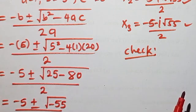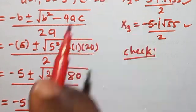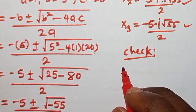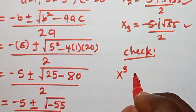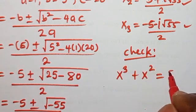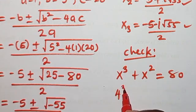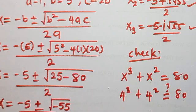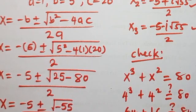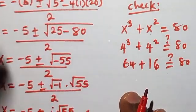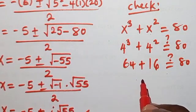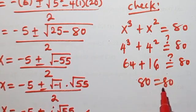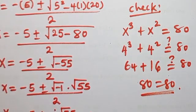Let's check the real solution. Substituting x = 4 into x³ + x² = 80: 4³ + 4² = 64 + 16 = 80. And 80 = 80 — confirmed. That is the end of the solution.